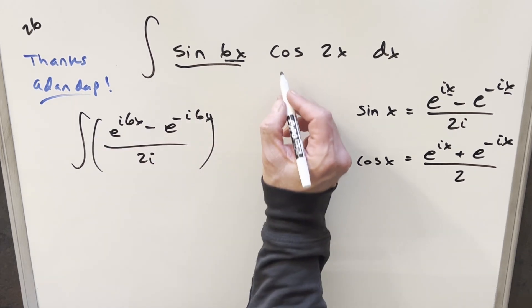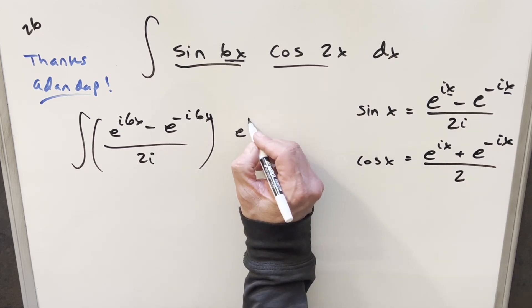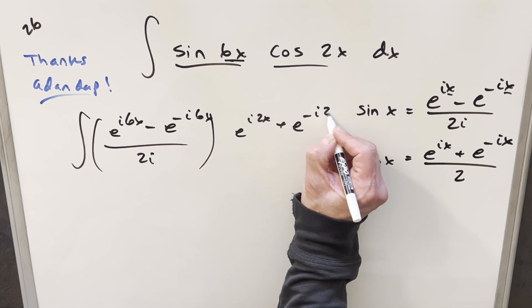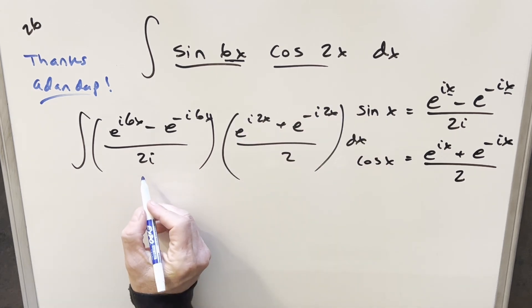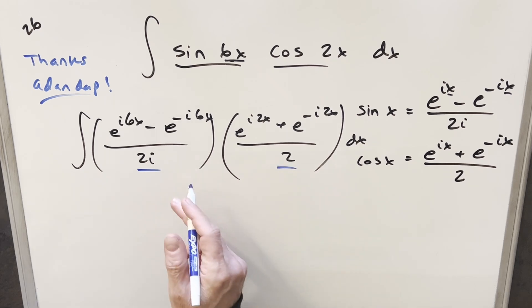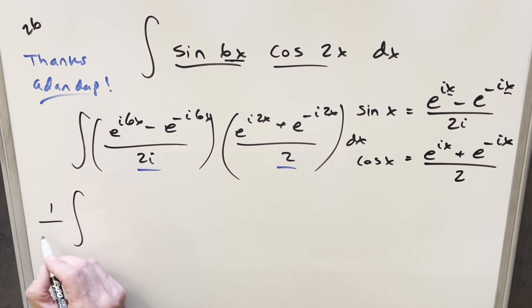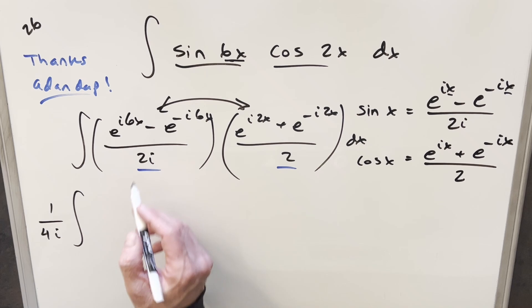And then we'll do the same kind of thing for cosine 2x. We'll rewrite it using this definition. So this is going to become e^(i2x) plus e^(-i2x) all over 2. But now the first thing I can do is let's take this 2i times 2. We can multiply those together. And when I rewrite this integral, I'll just bring this out front. So I can bring this out front of the integral as 1 over 4i.